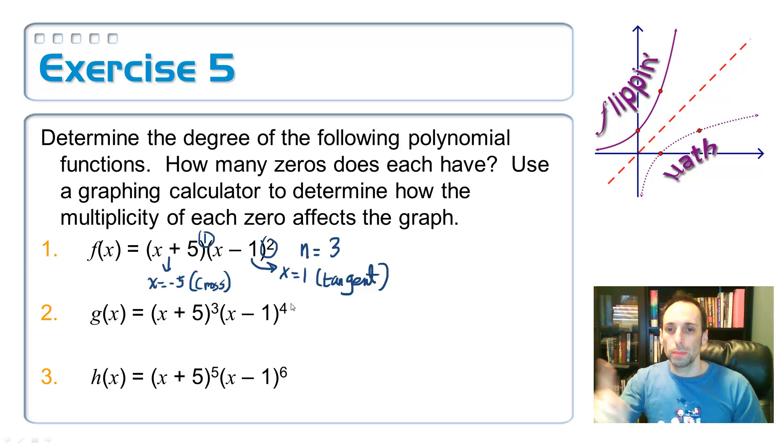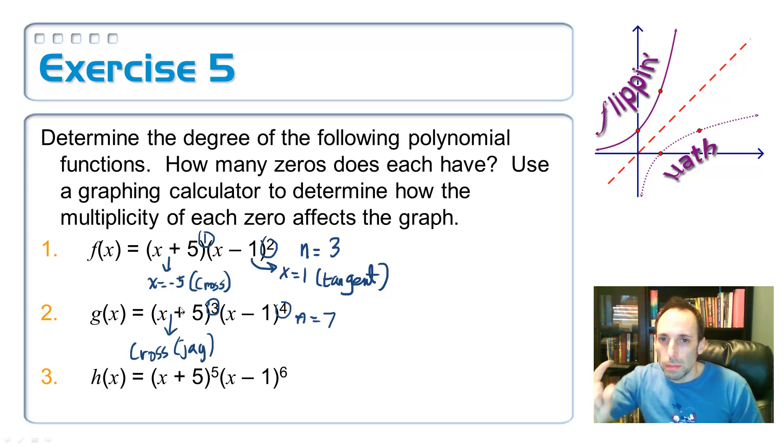So on number two, add up the two exponents. I've got a four. I've got a three. Add those up. The degree is seven. So n equals seven. On the first one, odd multiplicity. What's it going to do? It's going to cross the x-axis right there. And it might jag just a little bit. It's going to maybe flatten out a little bit. Kind of like a cubic. And then on the x equals one, from the next parentheses, it's to the fourth power, which is even. Which means it's going to be tangent. And it's going to flatten out a little bit since it's higher than a power of two.